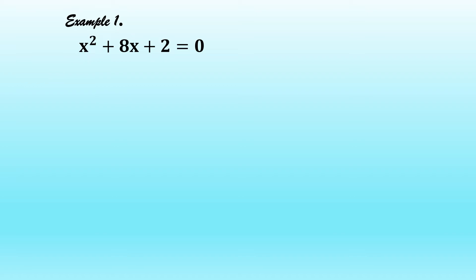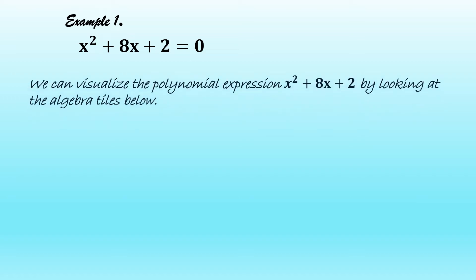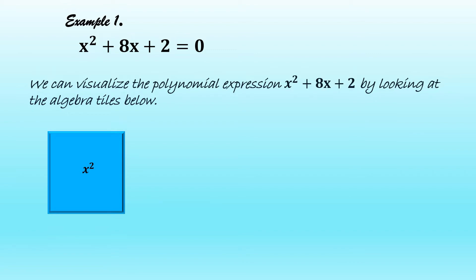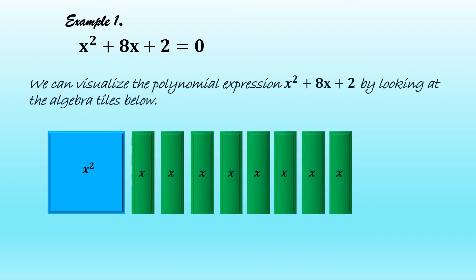Let us look at the first quadratic equation which cannot be solved by extracting square roots or factoring. We have x squared plus 8x plus 2 equal to 0. We can visualize the polynomial expression x squared plus 8x plus 2 by looking at the algebra tiles below. For x squared, we have the large blue tile, and we have 8 green tiles and 2 yellow tiles to represent positive 2.